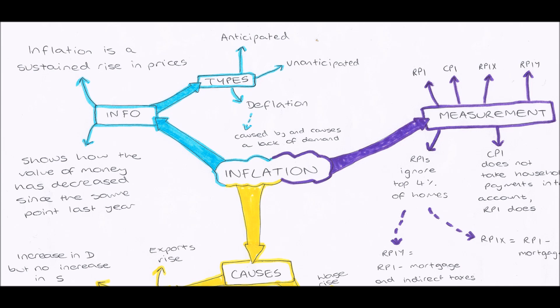There's a few differences between the different indexes. So the CPI, or the Consumer Price Index, does not take into account household payments, for example mortgages and paying the rent. However, the RPI, the Retail Price Index, does take these things into account.